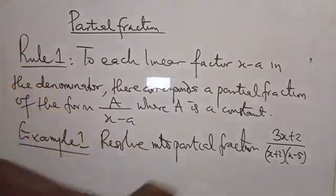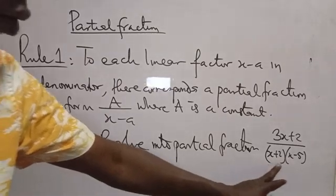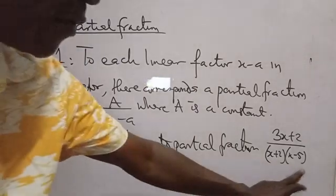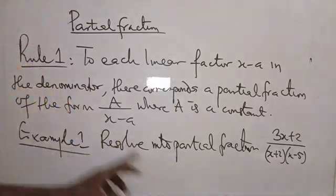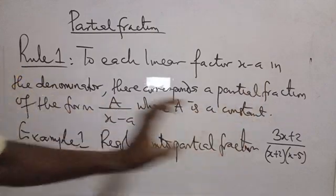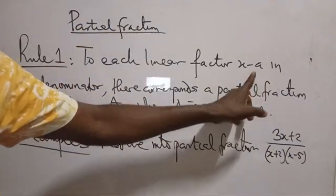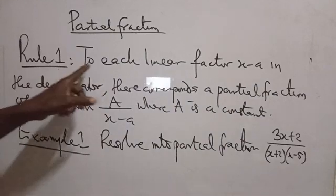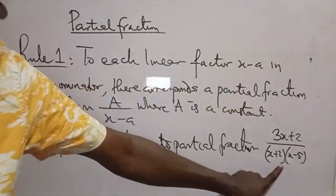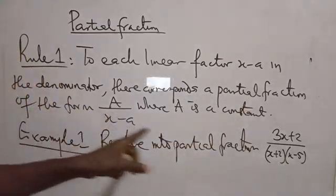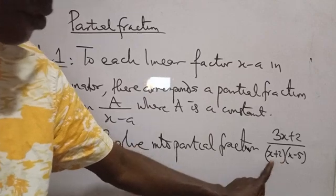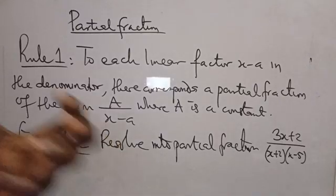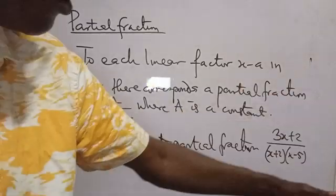Looking at this question, look at the denominator. We have two linear denominators here. X plus 2 is a linear expression. X minus 5 is a linear expression. Comparing with X minus A, you will see that we can apply Rule 1, because we have a constant here just like the capital A. So to each linear factor in the denominator — this is a linear factor, this is a linear factor — there corresponds a partial fraction of that form. Since we have two linear factors, we are going to have two constants.